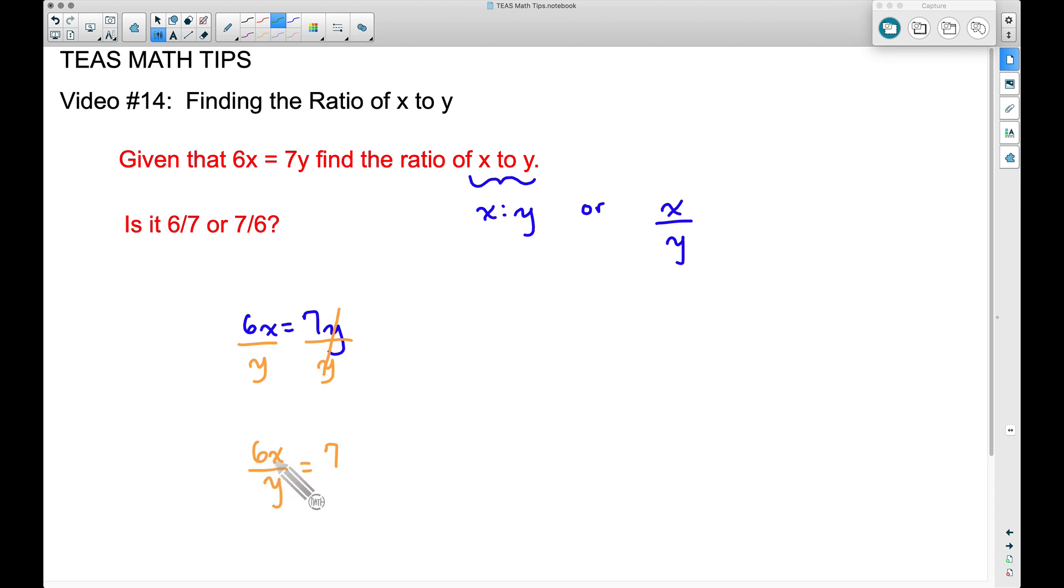Since 6 is getting multiplied by x, and you may say, okay, what are we doing with the y? Don't worry about it. If we divide both sides by 6, the 6s cancel out.